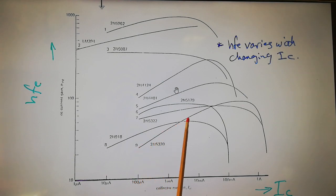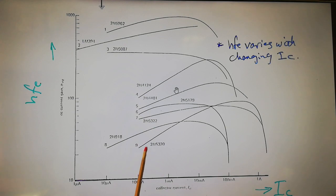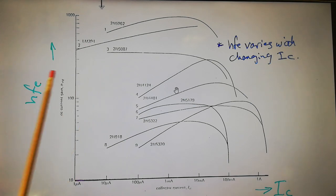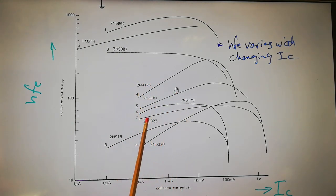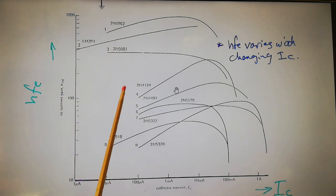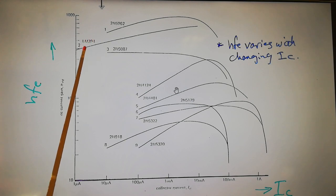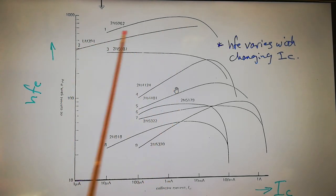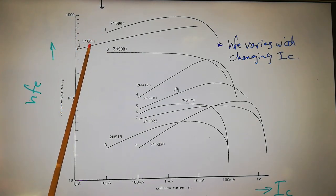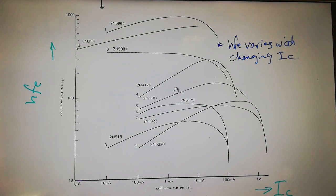hfe increases as Ic increases, then settles and starts decreasing with further increasing Ic. That's the behavior of most transistors' hfe. That's why for accurate circuits — differential amplifiers, logarithmic amplifiers, whatever — you cannot treat the transistor as a current device and base calculations on hfe and beta; that won't work for accurate circuits. The LM394 is a matched pair with an almost flat line, well-selected and matched in one package, shown here as a reference.